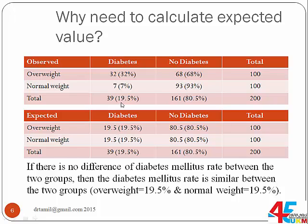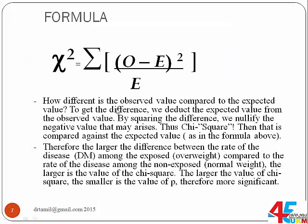Based on this 19.5%, we calculate the expected value. The expected value for cell A, for example, is 39 times 100 divided by 200. The same calculation applies for the rest of the cells. To find how different the observed value is from the expected value, we deduct the expected value from the observed value.